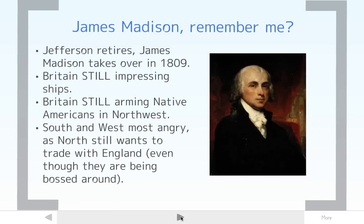It all begins with James Madison. You might remember him from the Constitutional Convention — he was nicknamed the Father of the Constitution, the one who got the whole convention organized and basically proposed the Virginia Plan. He takes over for Thomas Jefferson when Jefferson retires in 1809, and when Madison is president, he inherits a problem with England that had been a problem for Washington, Jefferson, Adams, and now Madison.